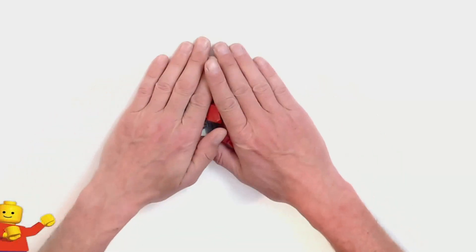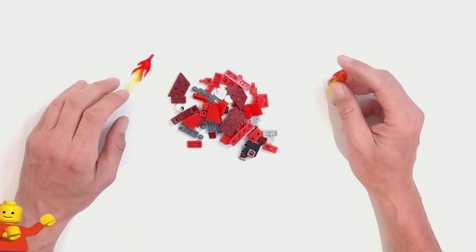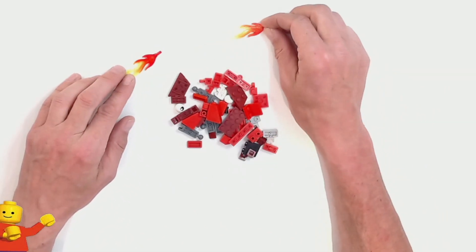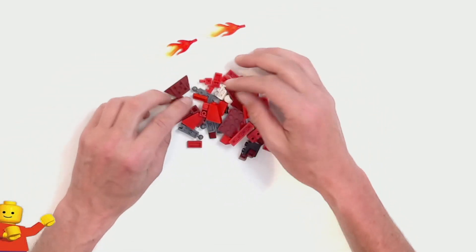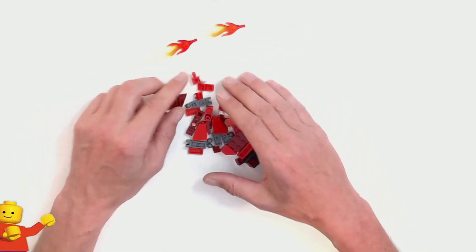All right, so red parts, obviously. Got some flame elements. Oh dear. Flame elements. We got some printed eyeballs. And I think that's it for the printed parts.